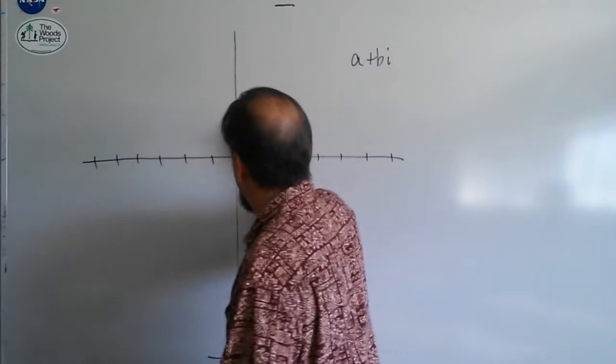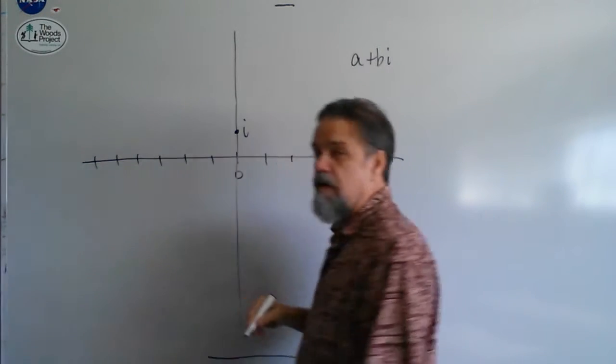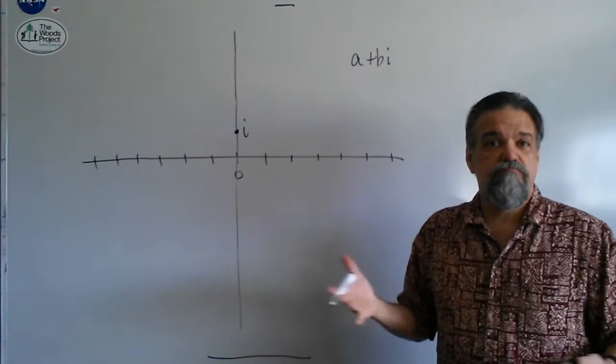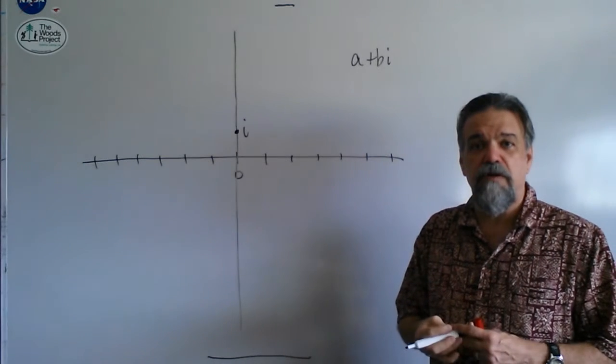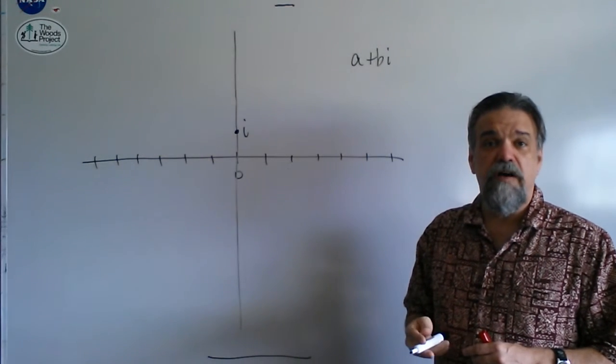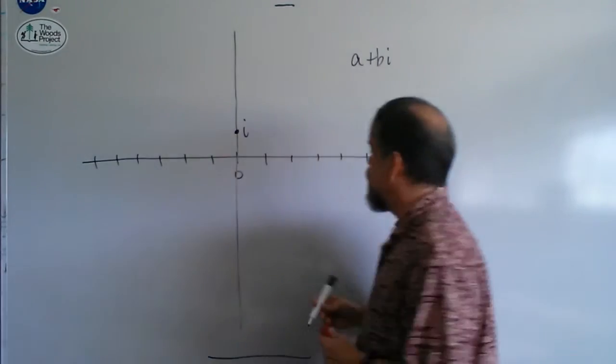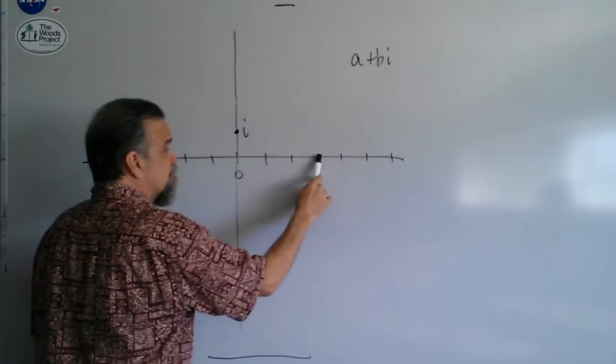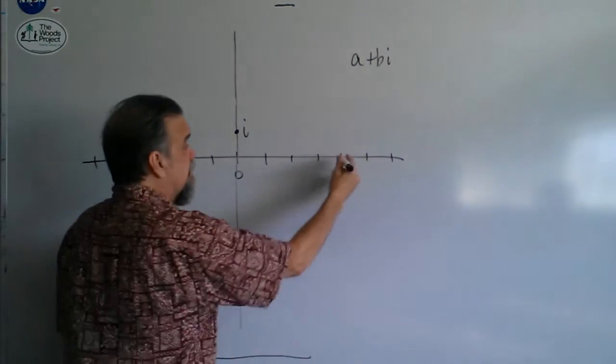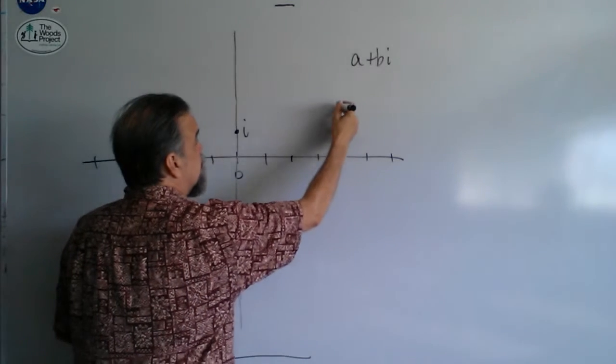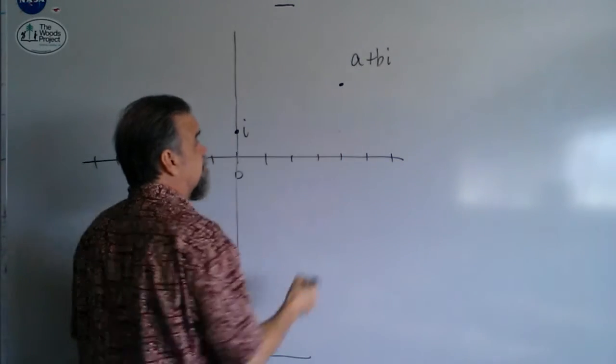So, this is where i is. And let's say I want to find where the number four plus three i is. Well, then I would go one, two, three, four, the real part, and then the imaginary part, one, two, three, and it would be up there.